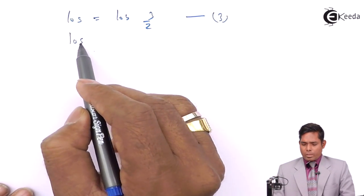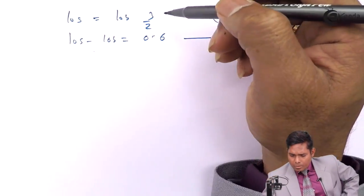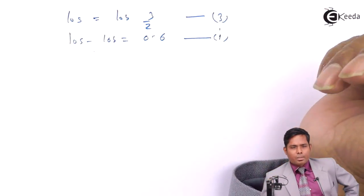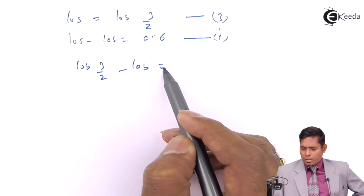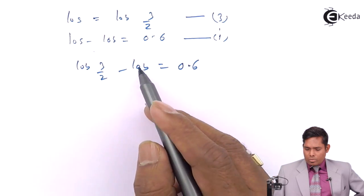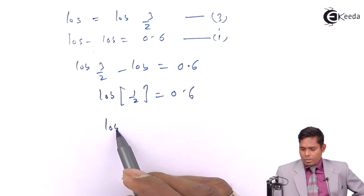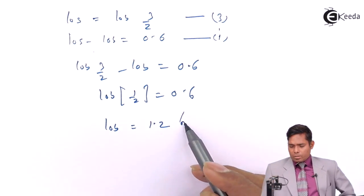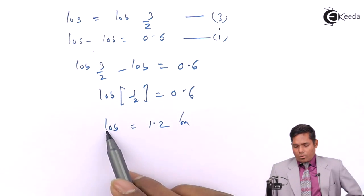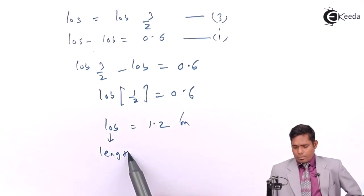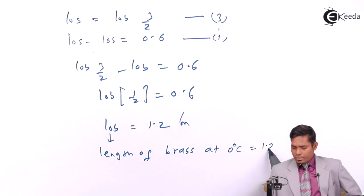Going back to equation number 1: L_0S minus L_0B = 0.6. Substituting L_0S = (3/2)·L_0B: (3/2)·L_0B minus L_0B = 0.6, which gives (1/2)·L_0B = 0.6. So L_0B = 1.2 meters. That means the length of the brass rod at 0°C is 1.2 meters.